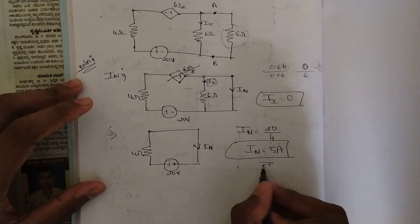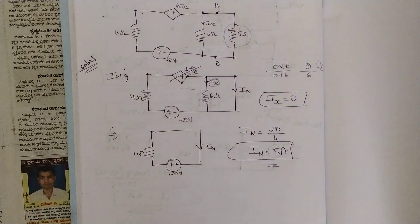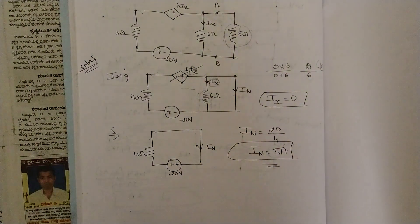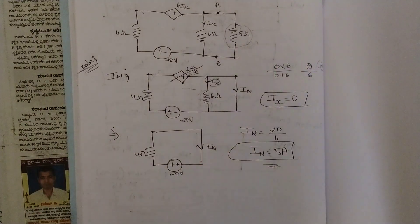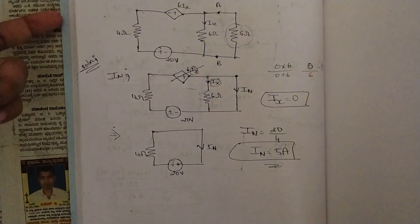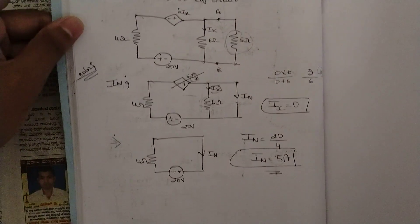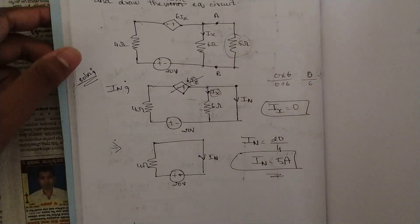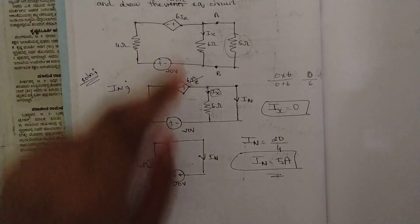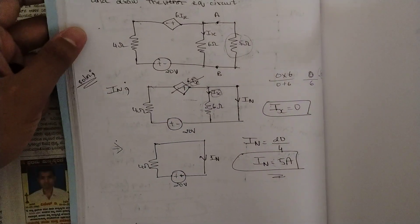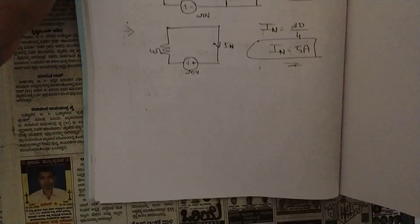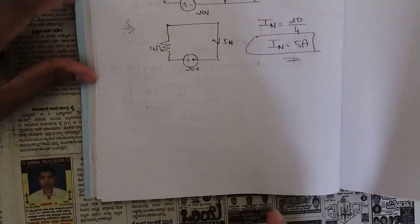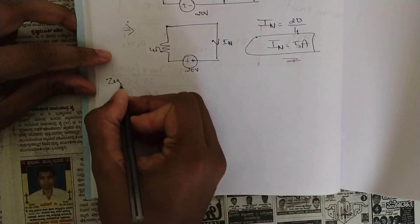The Norton's current is directly: IN = V/R = 20/4 = 5 ampere. This simple procedure gives us the Norton's current very easily. You should know this procedure well; otherwise you may make mistakes and follow a much longer approach. Next step is the calculation of Z equivalent.